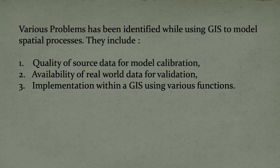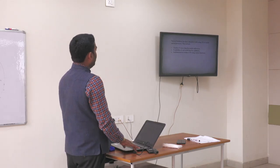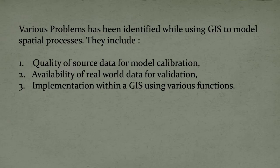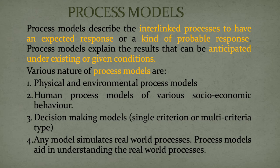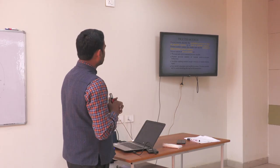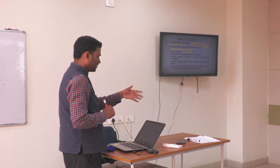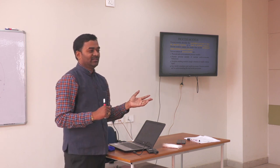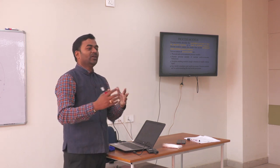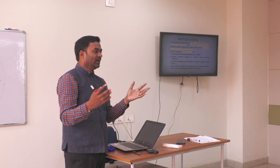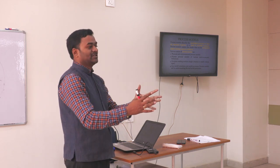Various problems have been identified while using GIS to model spatial processes, like the quality of source data for model calibration, availability of real-world data, and implementation within GIS. A process model is like an interlinked process to have an expected or probable response. The result can be anticipated under existing or given conditions — anticipating how much area will be damaged or covered by a particular facility.